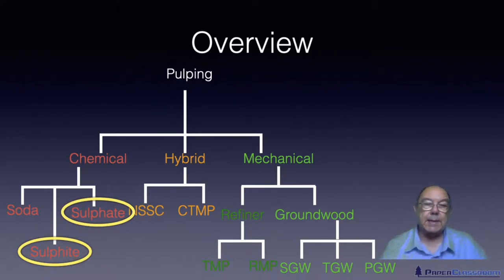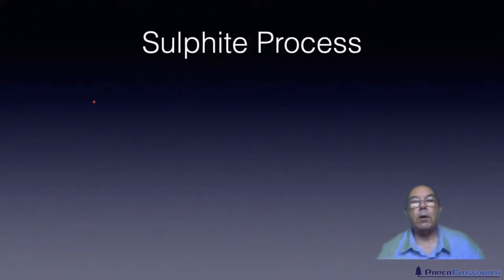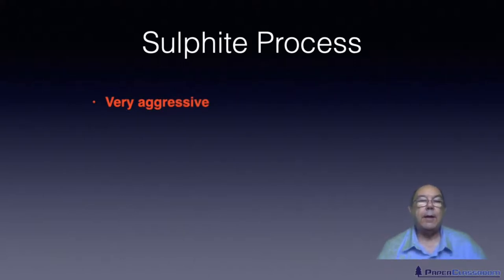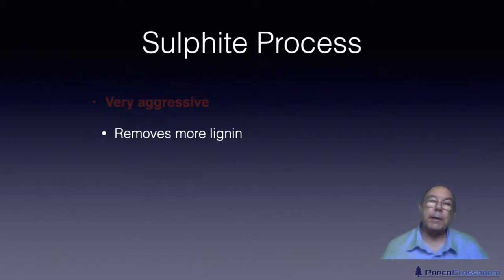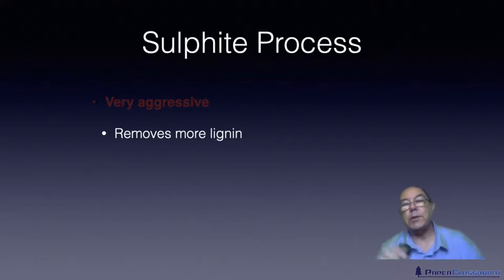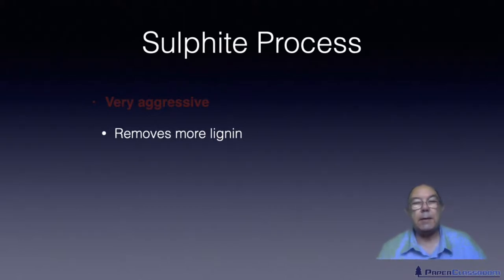The processes we're going to talk about in this section are the sulfite process and the sulfate process. Looking at the advantages and disadvantages of the sulfite process first: it is a very aggressive process at very low pH of one or two. It removes most of the lignin in the fiber — which is good — because the more lignin you remove, the less bleaching you need to do later on, since it is the lignin that causes discoloration. It removes the lignin so effectively that you typically only need three bleaching stages to reach acceptable whiteness.